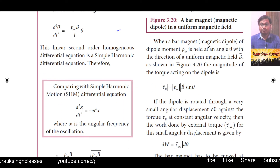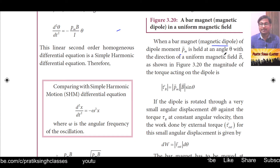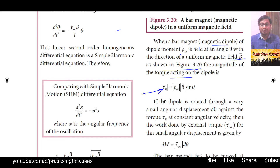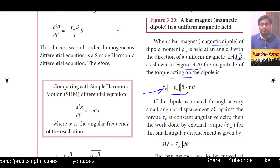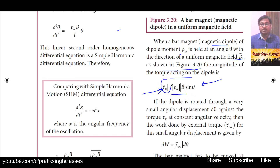When a bar magnet — a magnetic dipole, meaning a magnet which has two poles — of dipole moment vector p_m is held at an angle theta with the direction of a uniform magnetic field B, as shown in figure 3.20, the magnitude of torque acting on the dipole is given by: |τ| = |p_m| · |B| · sin θ, or in vector form: τ = p_m × B, which has both direction and magnitude.